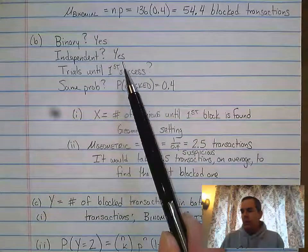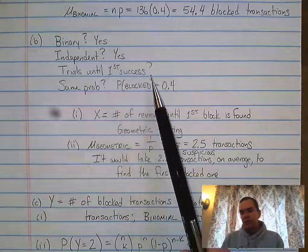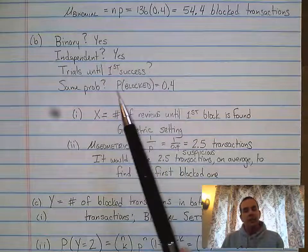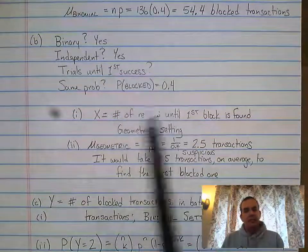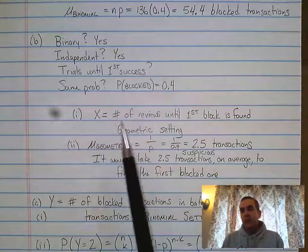So again, we're talking binary, we're talking independent, we're doing trials until first success. The same probability, yes, it's still 40%. Now the first question said to define the variable.